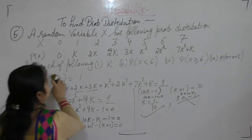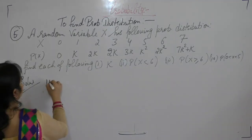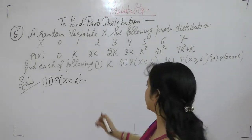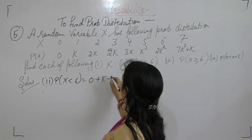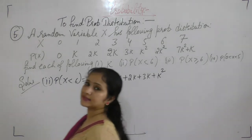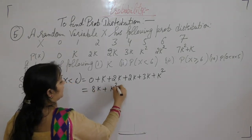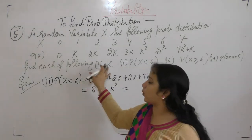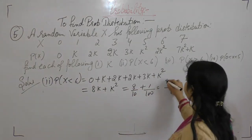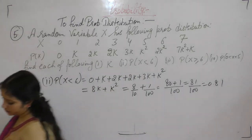Now the second part: probability X is less than 6. Probability of X less than 6 means probability at x=0, x=1, x=2, up to x=5. So we sum up: 2, 8k plus k squared. The value of k found in step 1 is 1 by 10. Putting k = 1/10: 81 upon 100, that is 0.81.